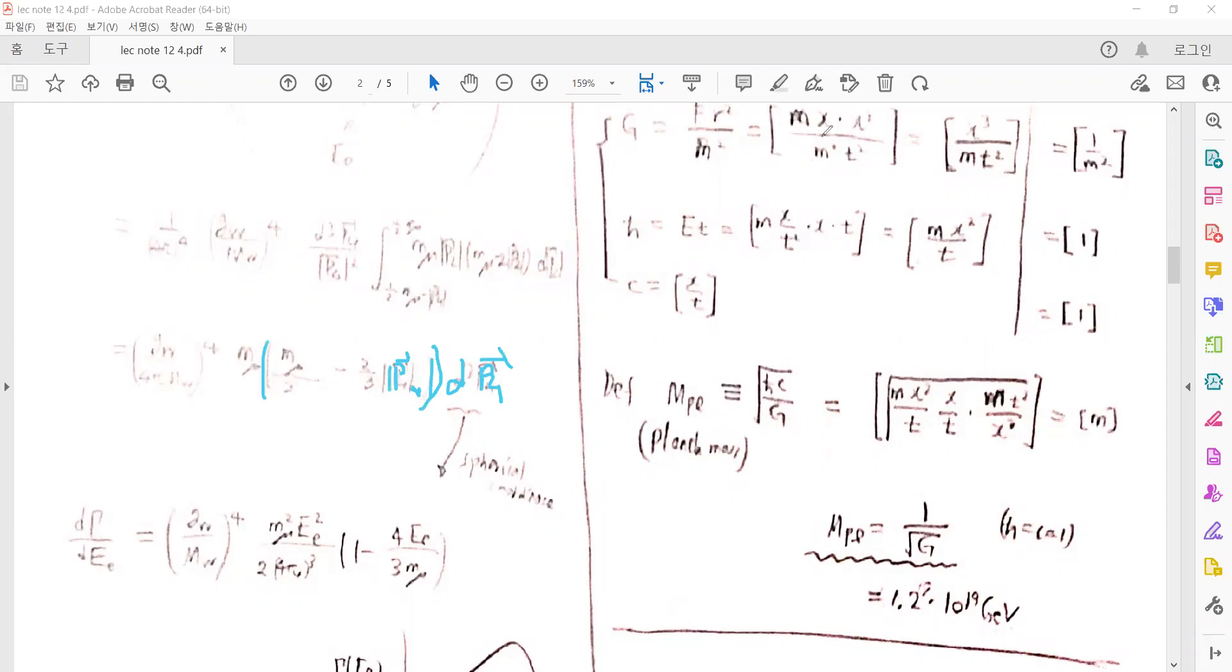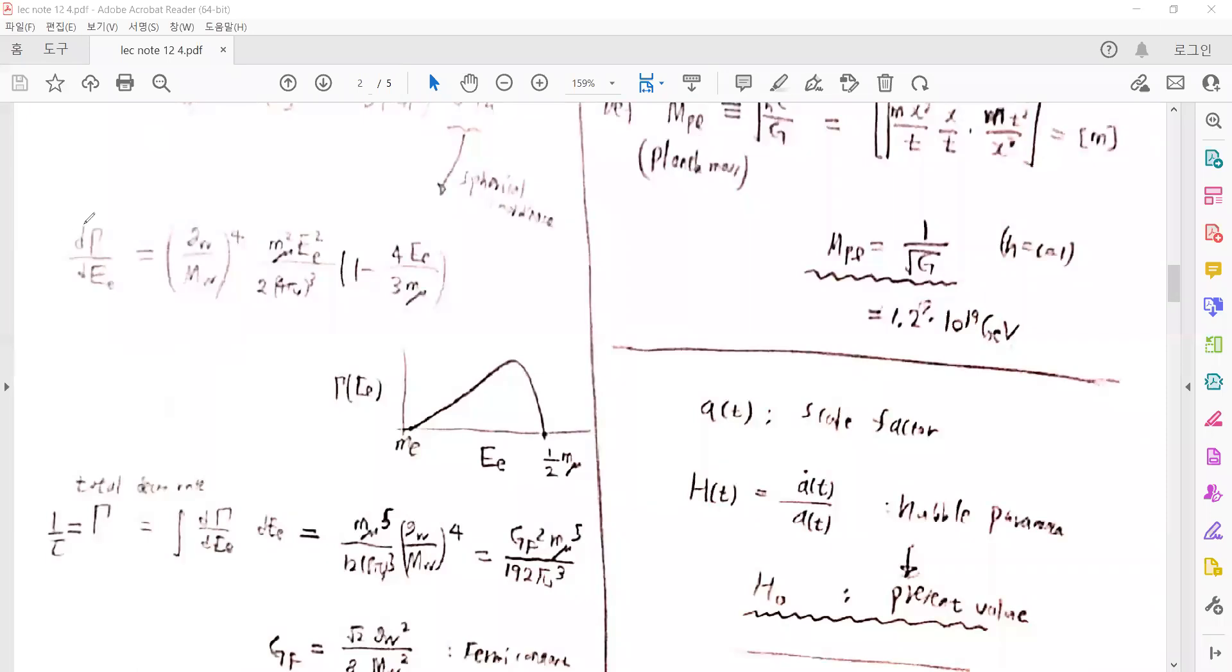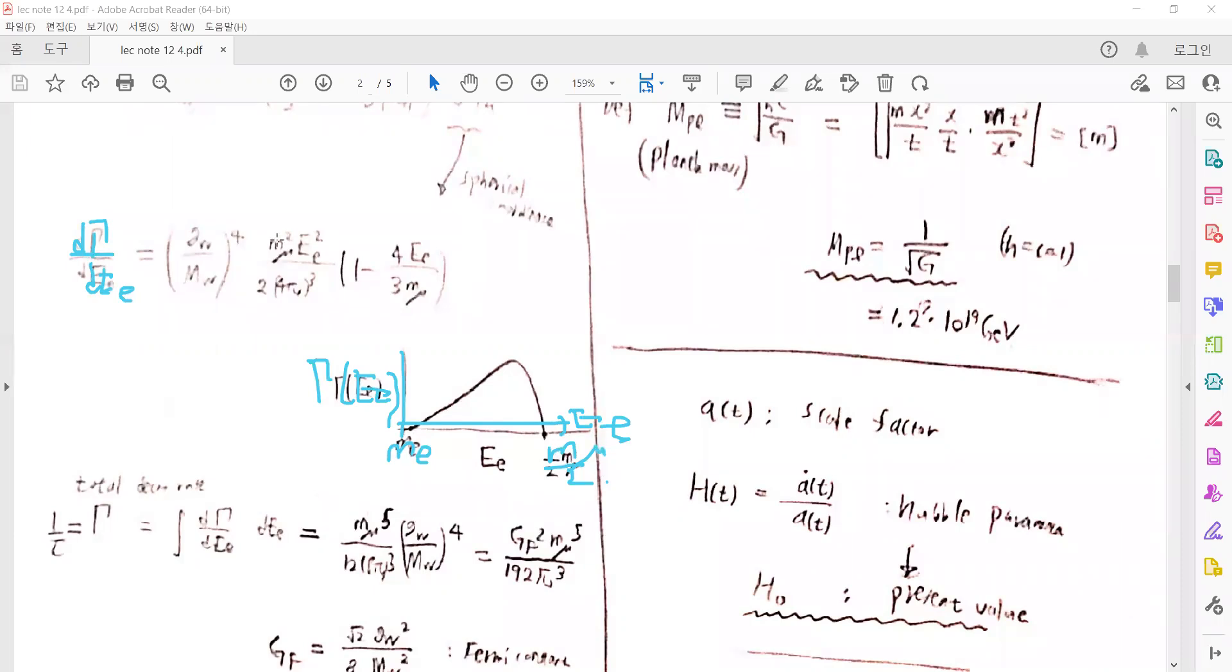It can be expressed in terms of powers of P4. We can calculate the differential decay rate over the electron's energy. The decay rate starts at the mass of the electron and goes up to one half of the muon mass.